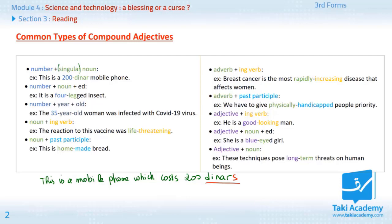When we are going to turn this into a sentence which contains a compound adjective, we say, this is a. Notice here the changes that we make. This is a 200 hyphen. This is the number. 200 hyphen dinar. Notice here that we omitted the s. There is no s. It's a singular noun. This is a 200 dinar mobile phone.